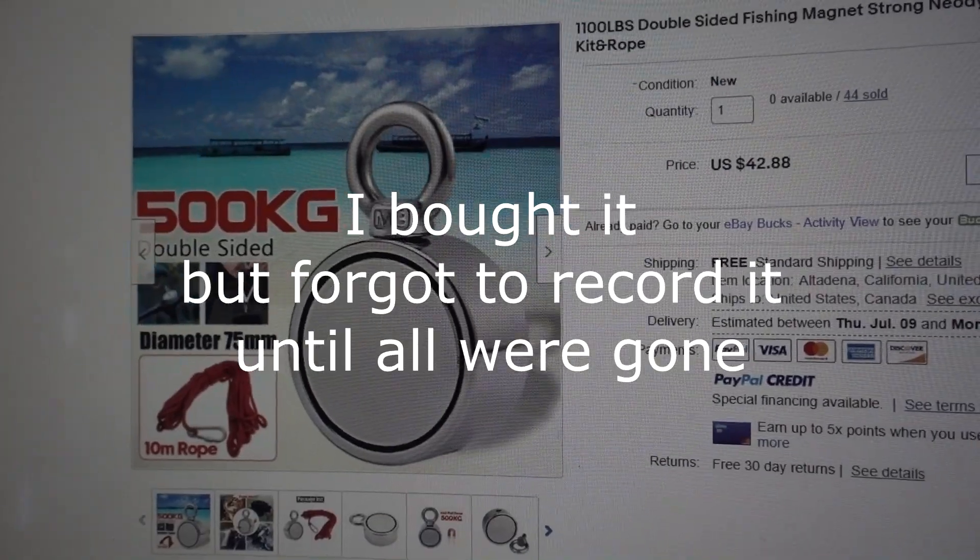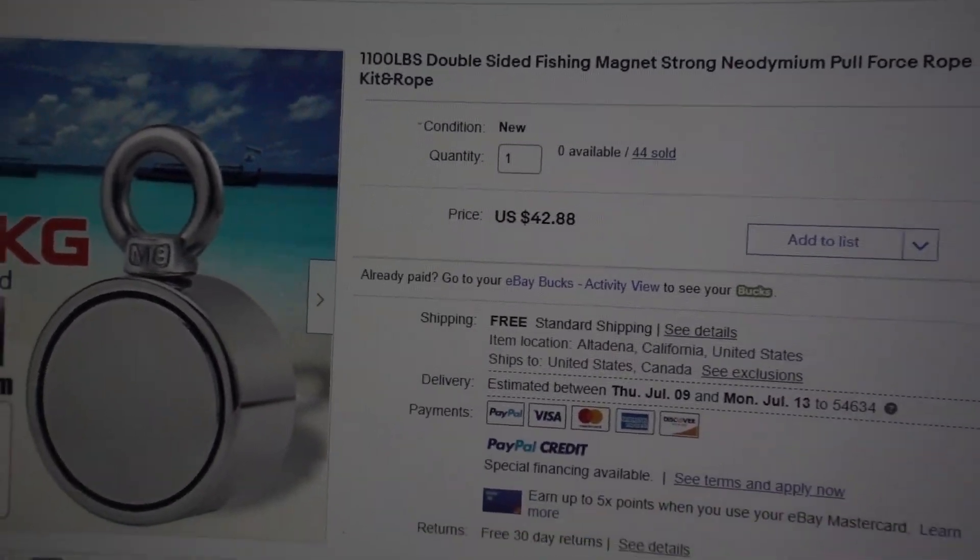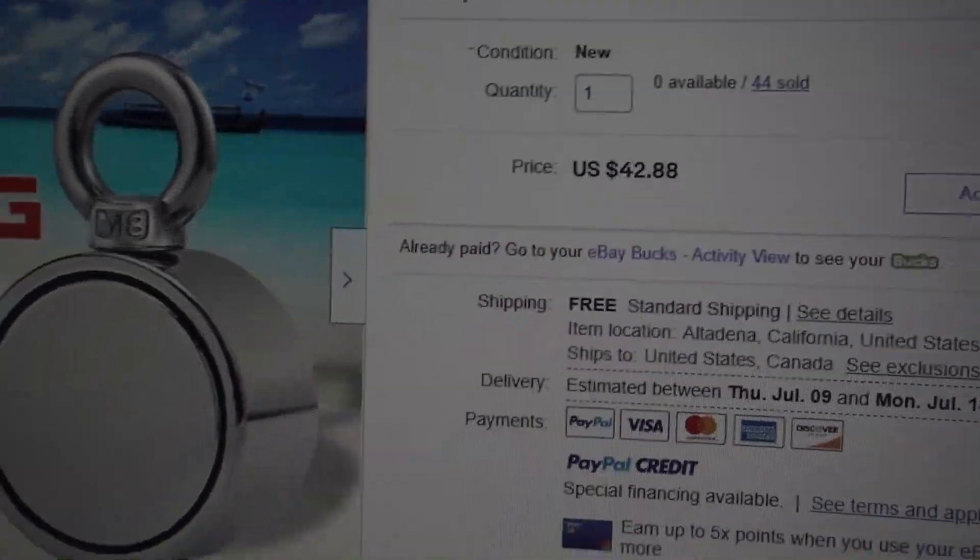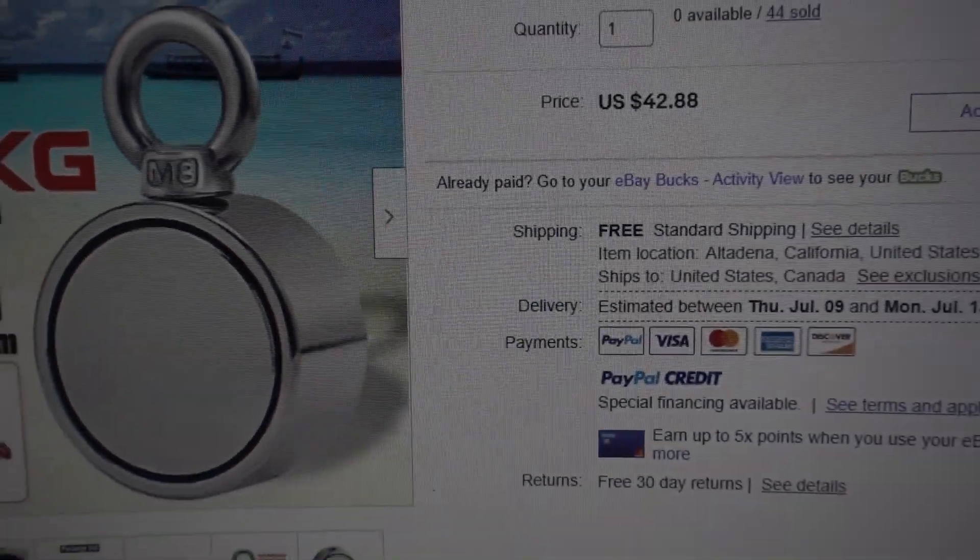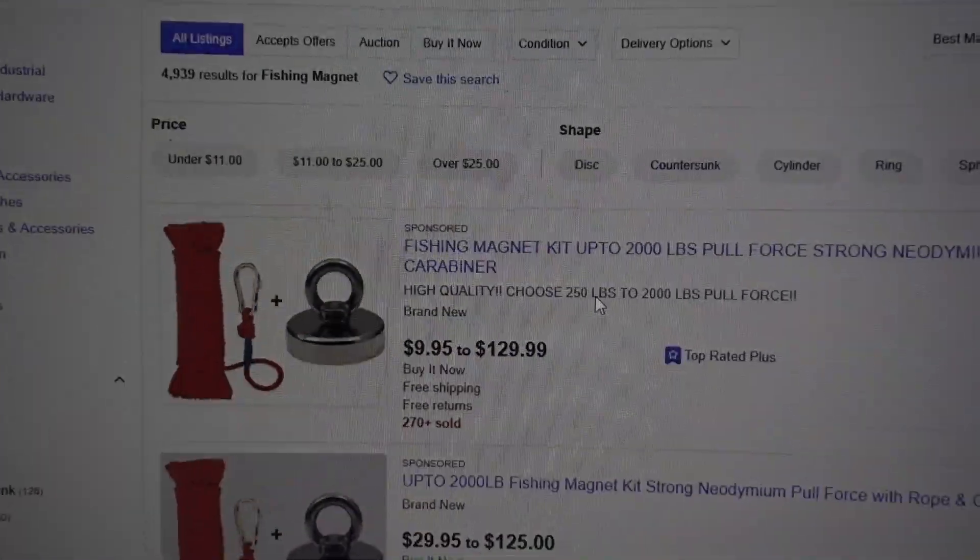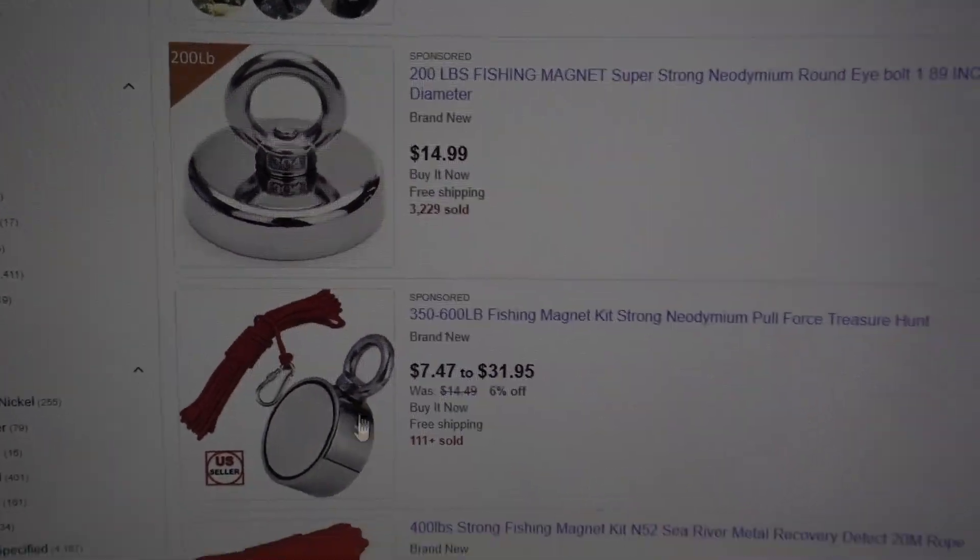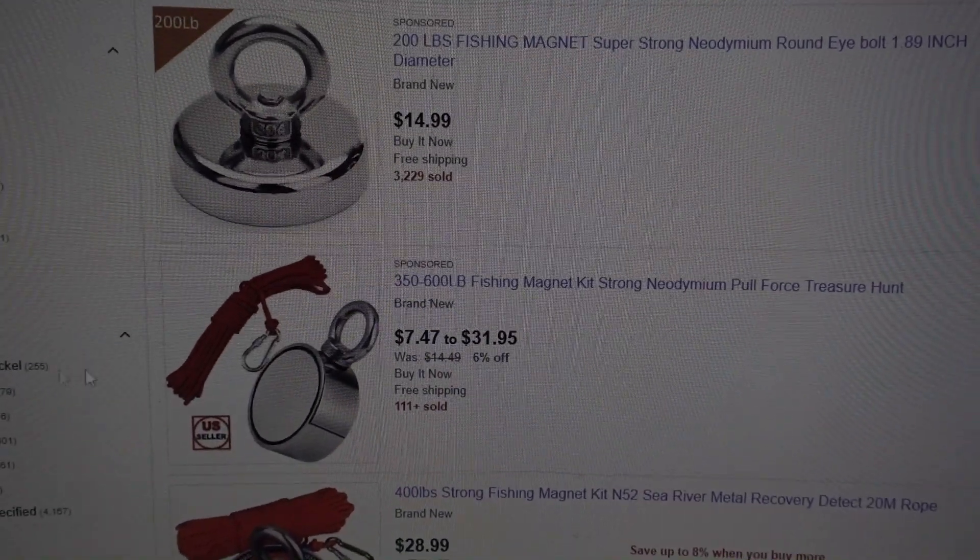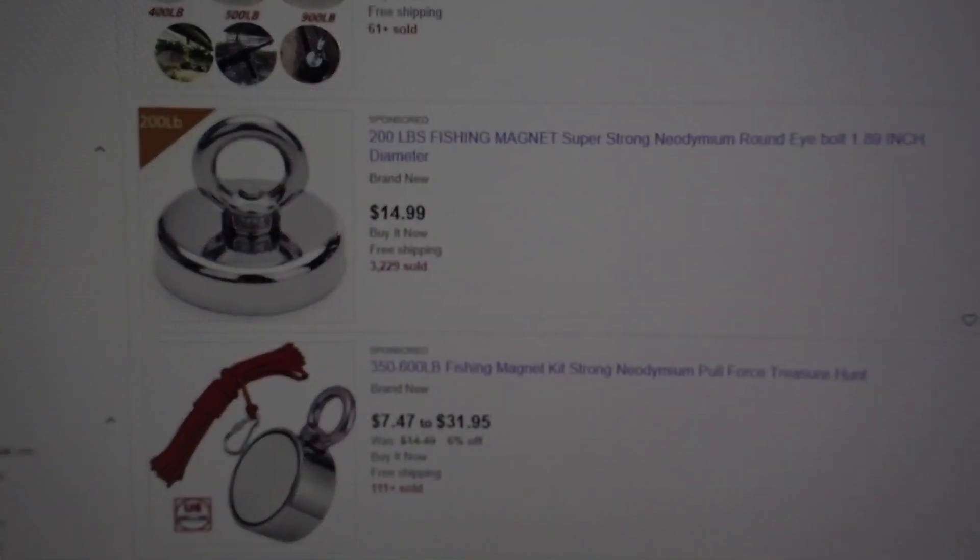Okay, what I'm going to do is order this 1,100 pounds double-sided fishing magnet with the rope for $42.88. Supposedly an 1,100 pound pull. You can get a wealth of them on eBay. But I want to go with this design here due to it will be dragging and it will hit right on the edge. So, wait for it to come and compare.